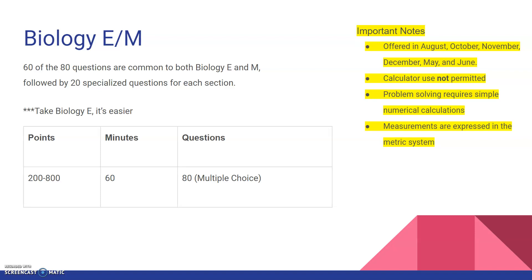Important notes. When the exams are offered: August, October, November, December, May, and June. One thing to note is the one in August is not actually offered for international students. So if you don't live in America, you probably won't be able to do the one in August. Calculators are not permitted. Problem solving requires simple numerical calculations. And also, know that measurements are in the metric system.